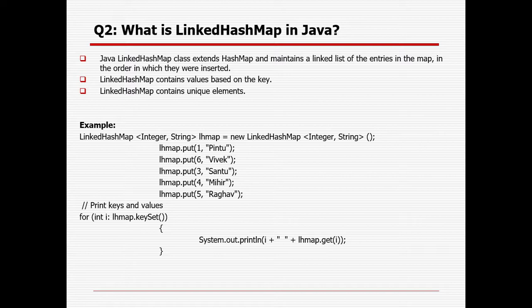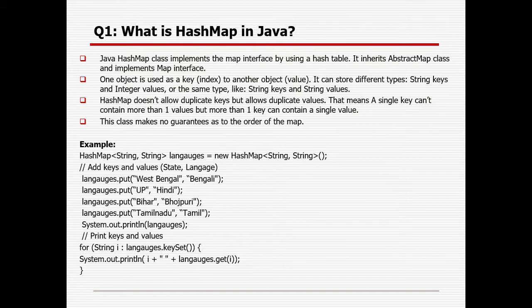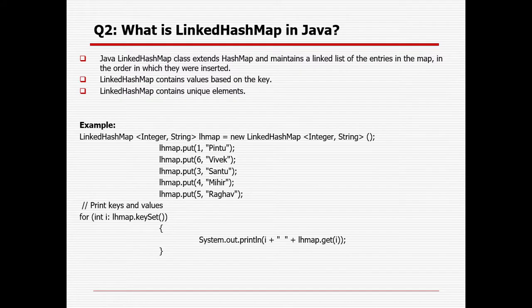What is LinkedHashMap? Java LinkedHashMap class extends HashMap and maintains a linked list of entries in the map in the order in which they are inserted. In HashMap, insertion order is not maintained — it gives random order. But in LinkedHashMap, the data is returned in the order it was entered, based on the key. LinkedHashMap contains unique elements only.